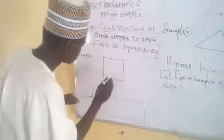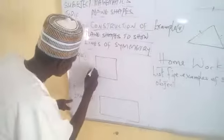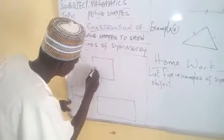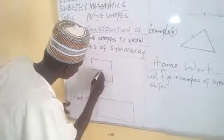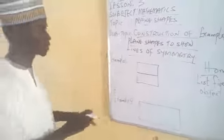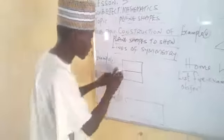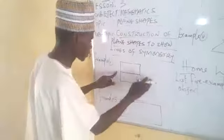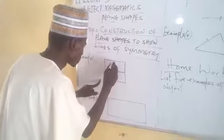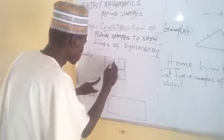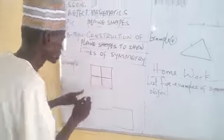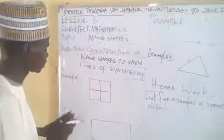Now this is a square. If I draw my line that passes through the center to the other end, I have divided the shape into two equal halves, which means this is a line of symmetry — horizontally. Now another one can come vertically, and it is now divided into equal halves.